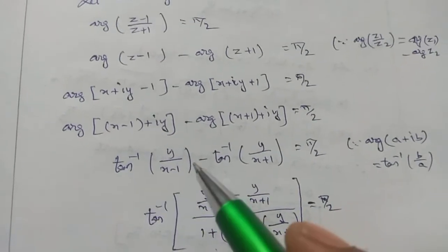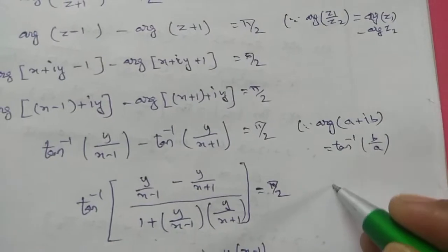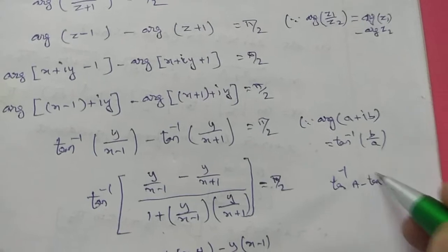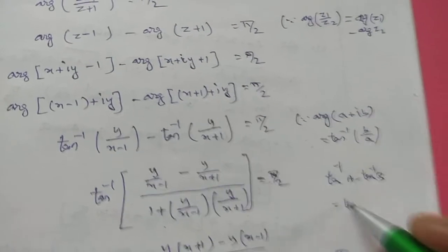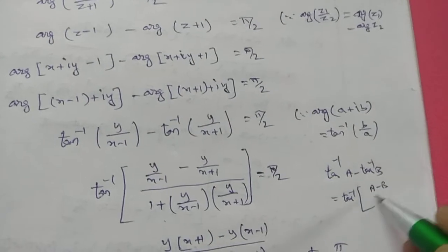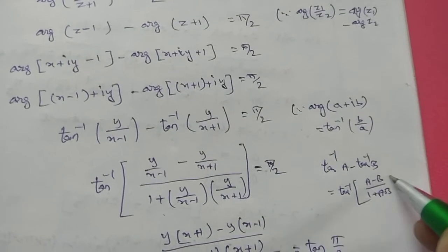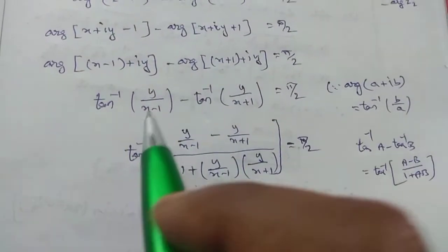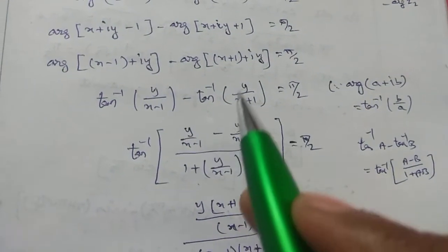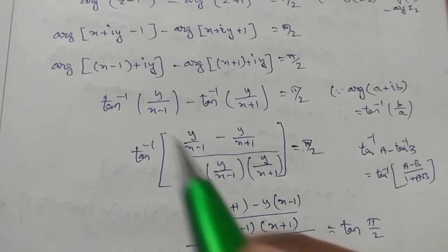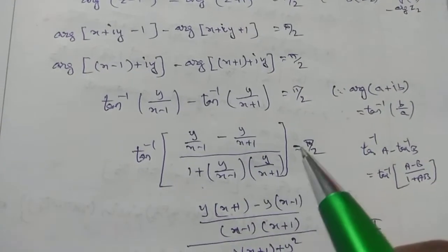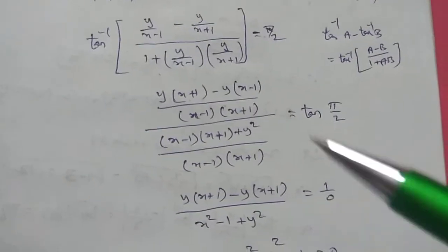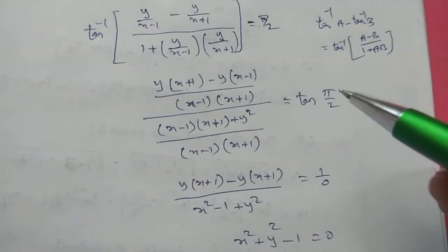Using the trigonometric identity: tan inverse of a minus tan inverse of b equals tan inverse of (a minus b) divided by (1 plus ab). Applying this formula, tan inverse of [a minus b divided by 1 plus ab] equals pi by 2. Taking tan on both sides, tan of (pi by 2) is undefined.